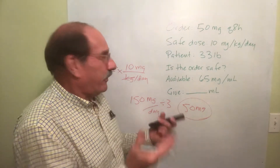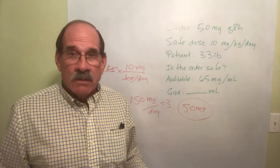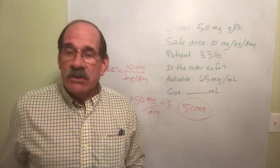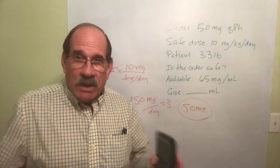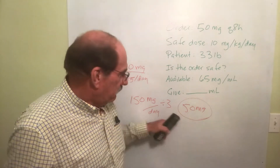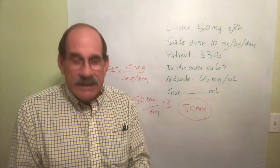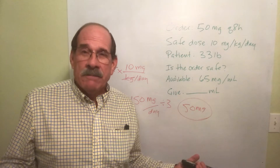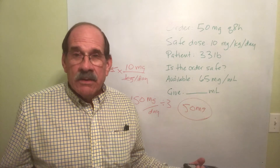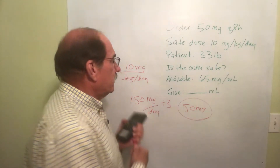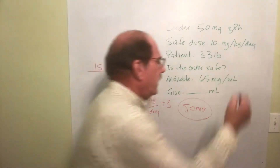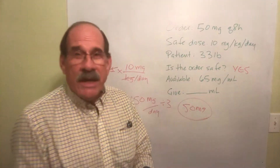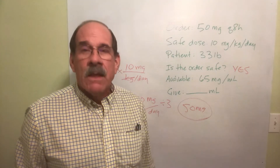So 50 milligrams per dose is the safe amount for a 33-pound patient. If it were a 66-pound patient, twice that amount would be safe — it's all done by weight. The doctor ordered exactly 50 milligrams, so the order is safe. On almost all homework problems you'll be asked: is the order safe? In this case, yes.